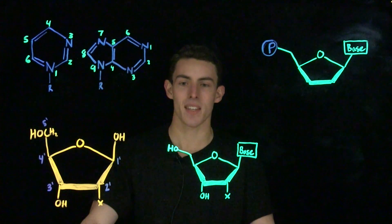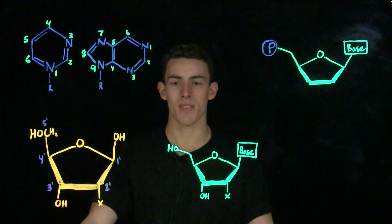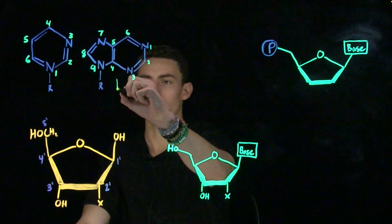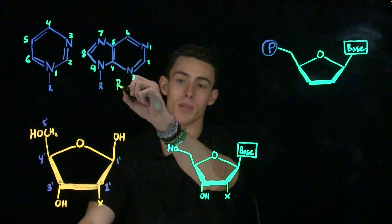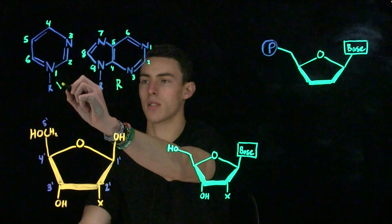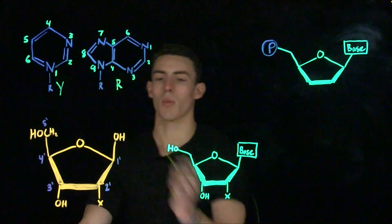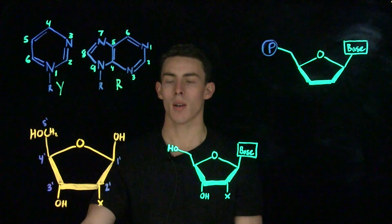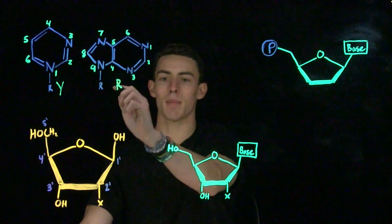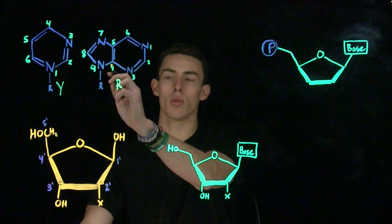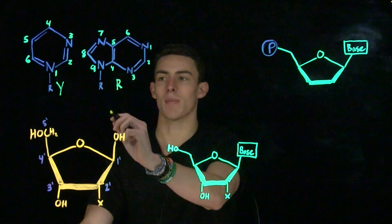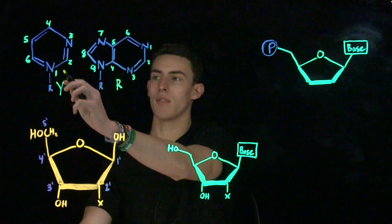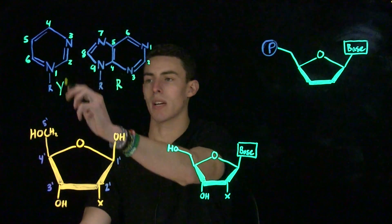Let's start with the bases. We have two types of bases: purines, which we'll represent with an R, and pyrimidines, which we'll represent with a Y. Purines consist of a nine-membered two-ring system, whereas pyrimidines consist of a six-membered single ring.